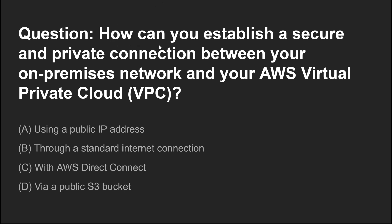This question asks: how can you establish a secure and private connection between your on-premises infrastructure and your AWS Virtual Private Cloud? The options are: using a public IP address, through a standard internet connection, with AWS Direct Connect, or via a public S3 bucket. A public IP address is not secure for private connections, and a standard internet connection is not ideal for secure private communication either.